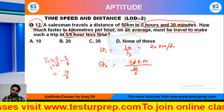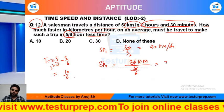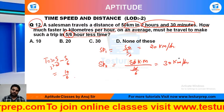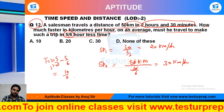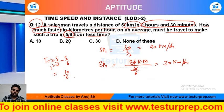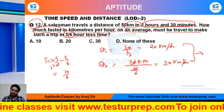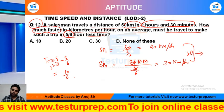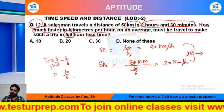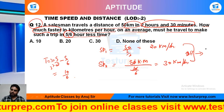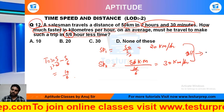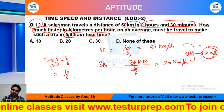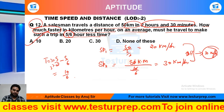So Speed 2 comes out to be 30 km per hour. Now, how much faster is that? The difference will be equal to 10 km per hour, which is option number 1.